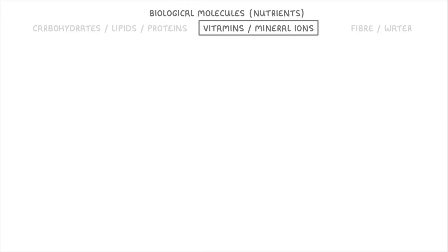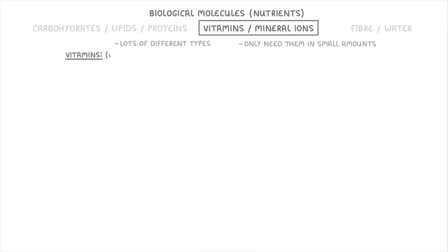Next we have vitamins and mineral ions, which are both similar in that there are lots of different types of each, and we only need them in very small amounts. The key difference though is that vitamins are organic molecules, meaning that they're made by living organisms, whereas minerals are inorganic and generally much simpler molecules.